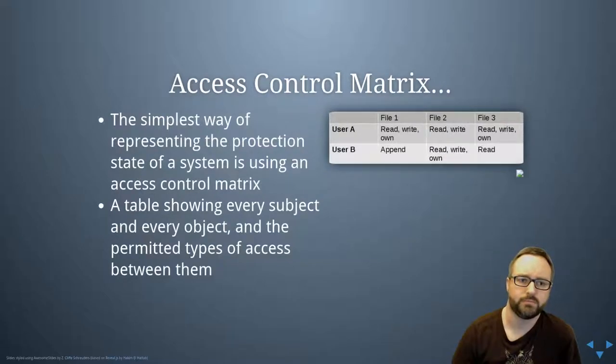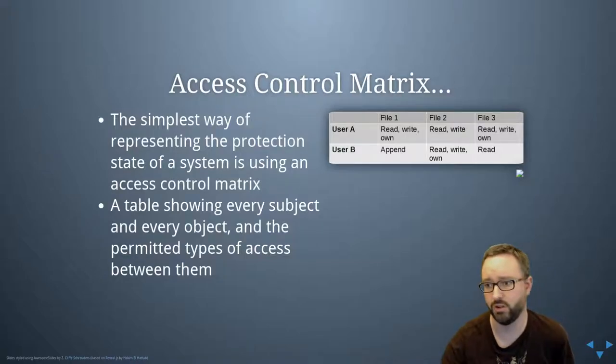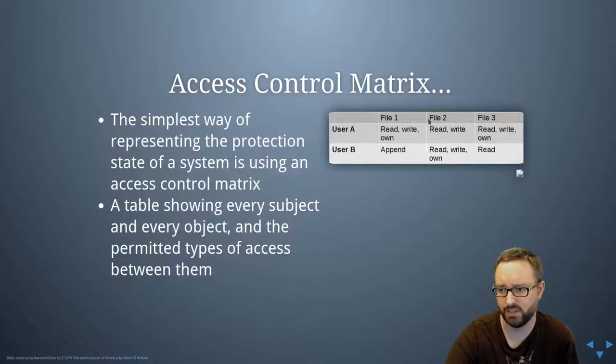The simplified way of reasoning about access controls is to think about it in terms of an access control matrix. It's the simplest way of representing the protection state of a system. Essentially, if we create a huge table that shows every single subject and every object and what are the permitted types of access between them, that's what an access control matrix is. In the columns we've got a list of every single file or resource on our system, and every user or process and what they're allowed to do.